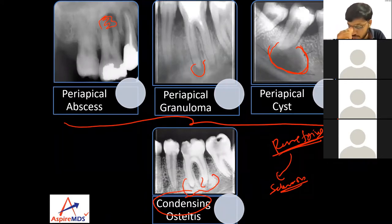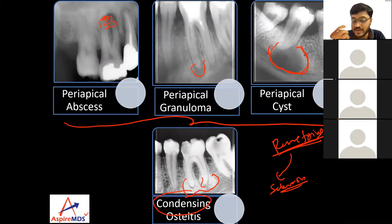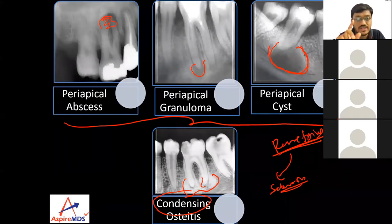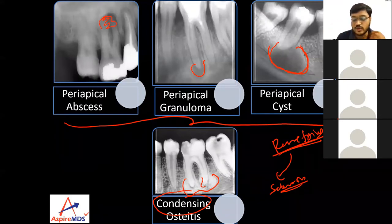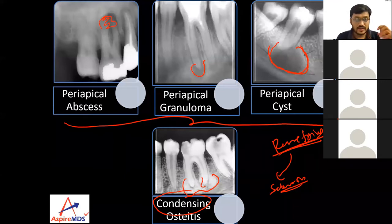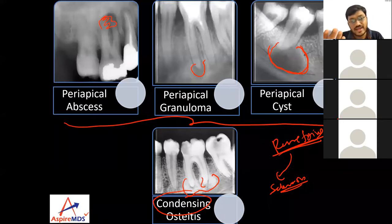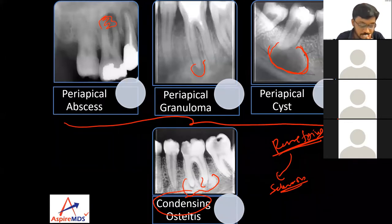Whenever there is a low-grade infection in the pulpal tissue, it causes irritation in the bone leading to proliferation of bone tissue, creating condensing osteitis. To differentiate condensing osteitis from periapical cemental dysplasia: one feature is vitality — the tooth will be vital in PCD. The PDL space would be intact and visible in both, so that alone may not help.